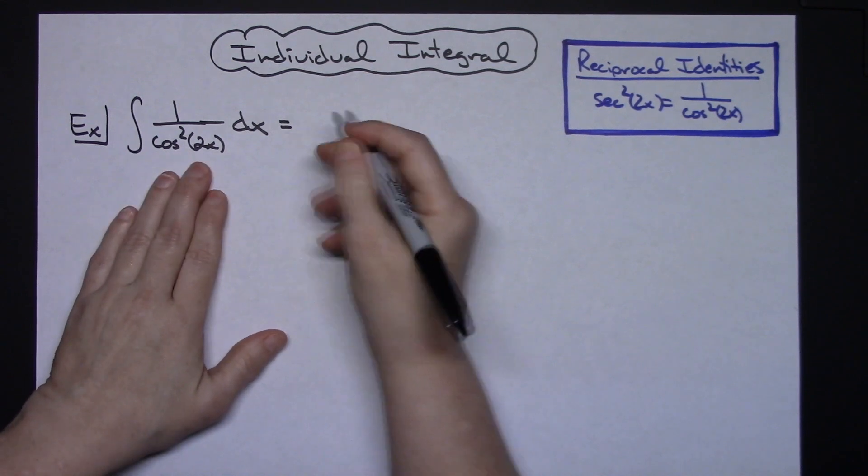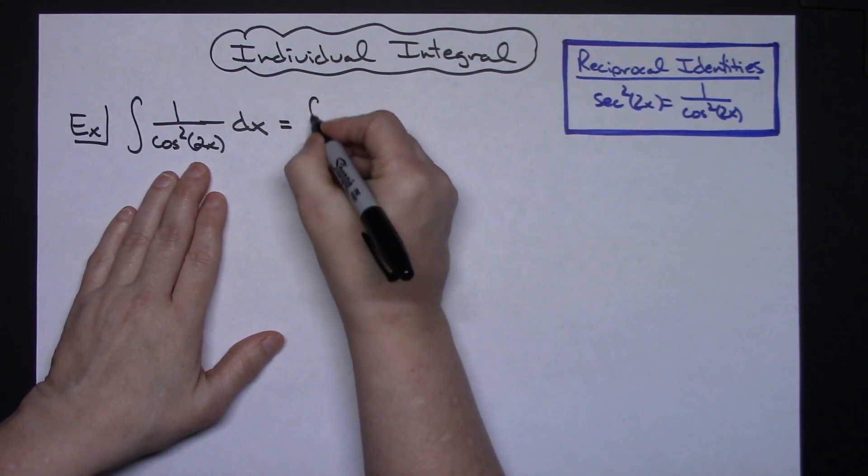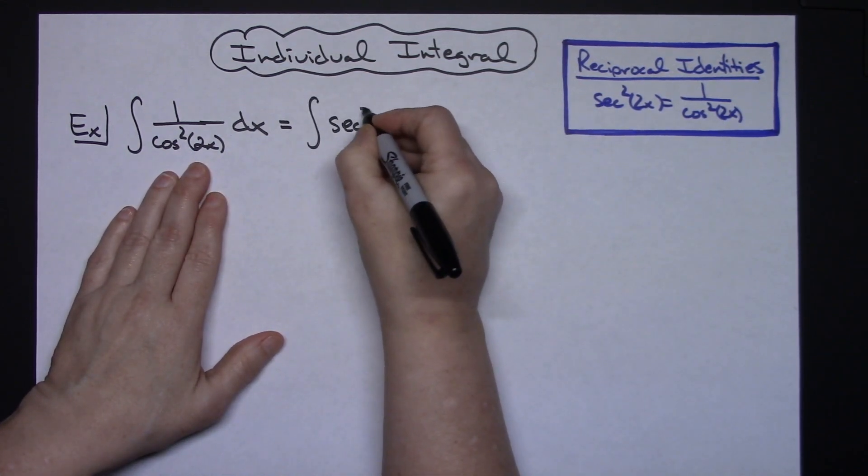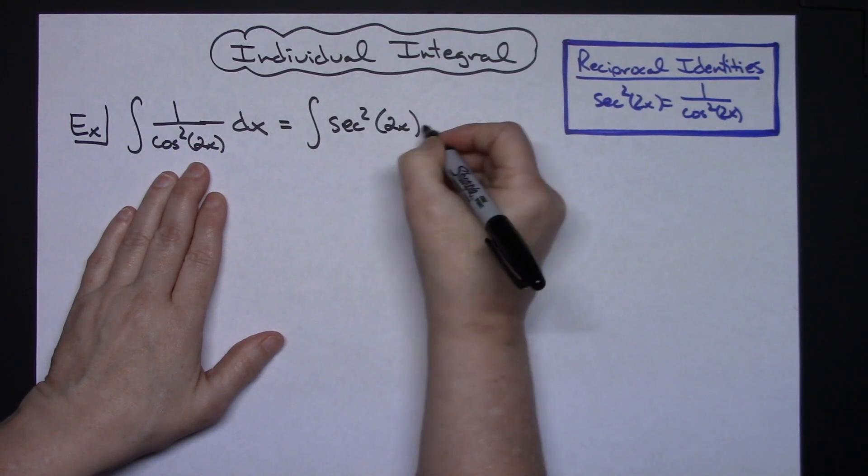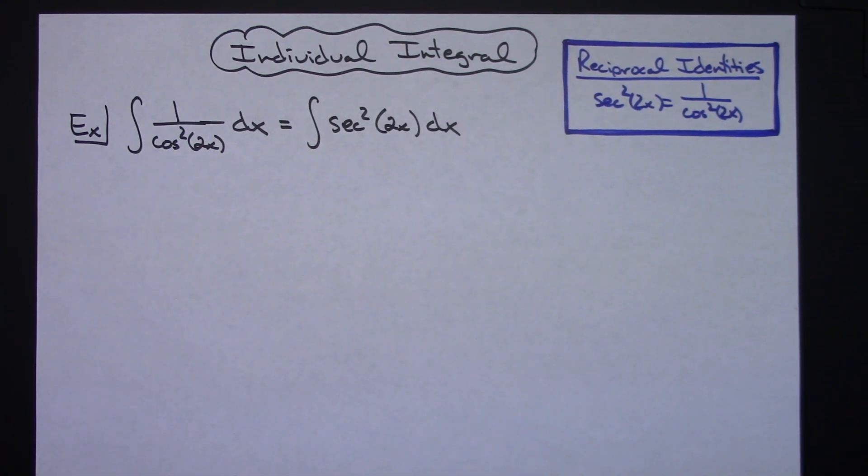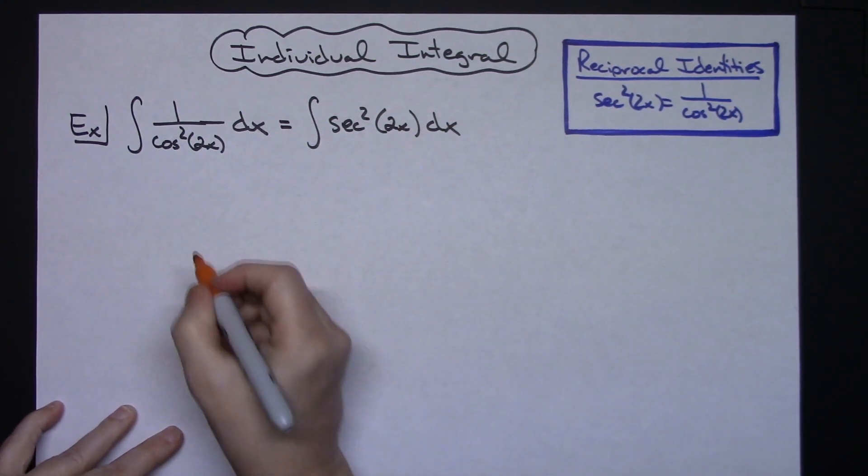So I'm going to substitute this for the integral of secant squared of 2x dx. Now once I get to there, then I can do a straight u substitution, and I can let my u be that 2x right there.